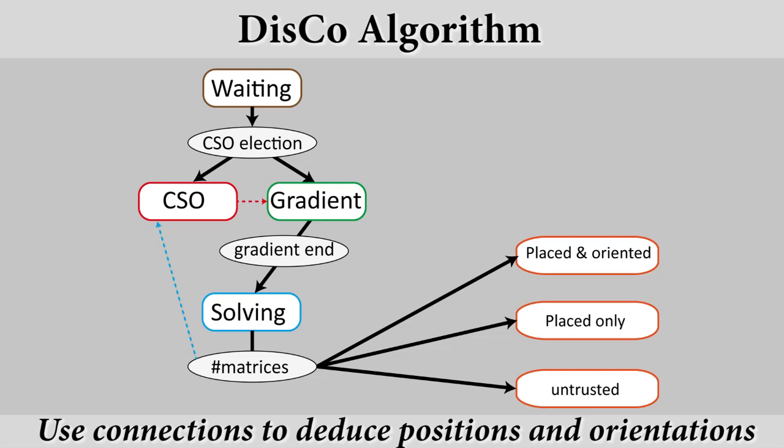At the end, robots can be well placed and oriented, or only localized or in an untrusted state. A detailed version of the algorithm is available in the paper.